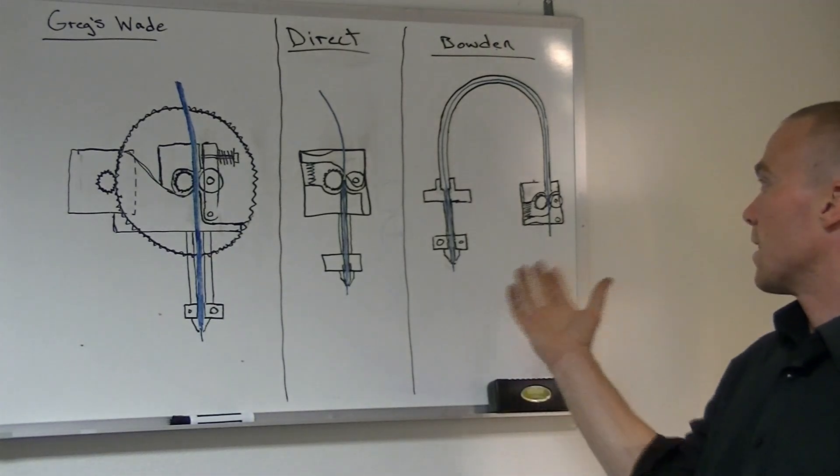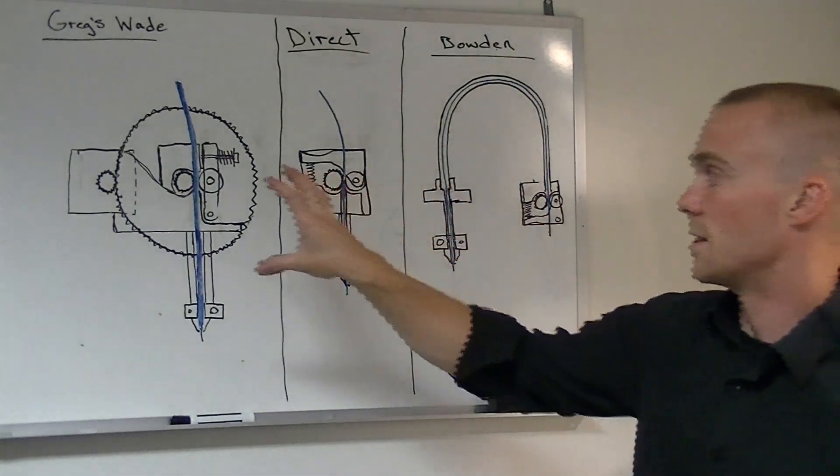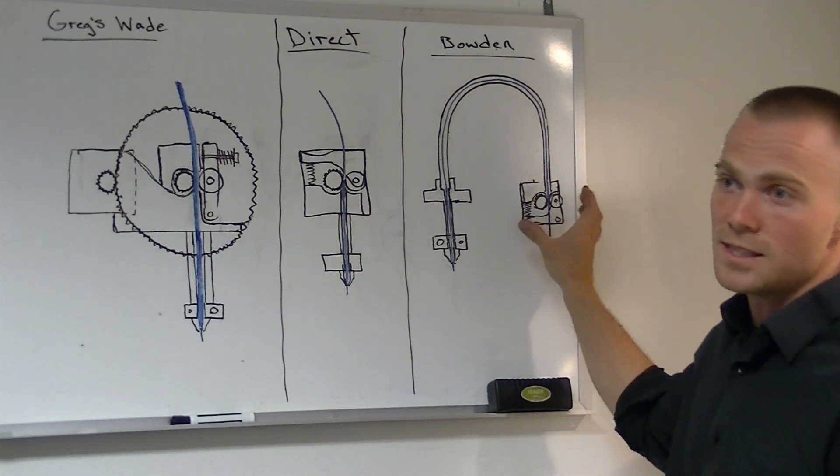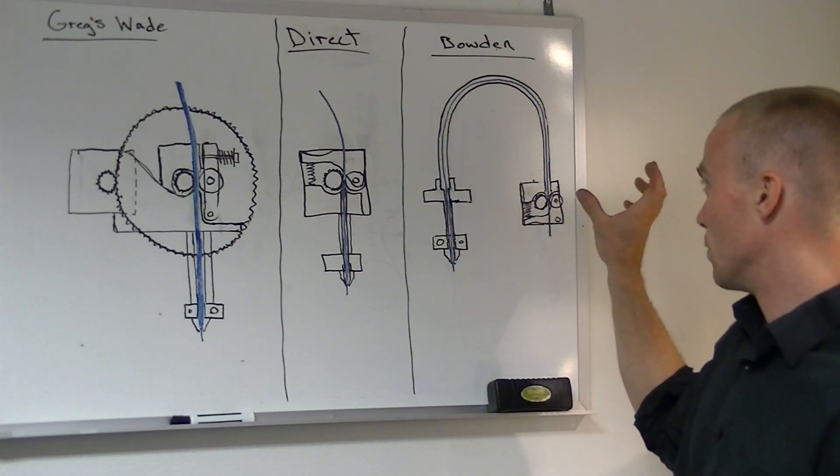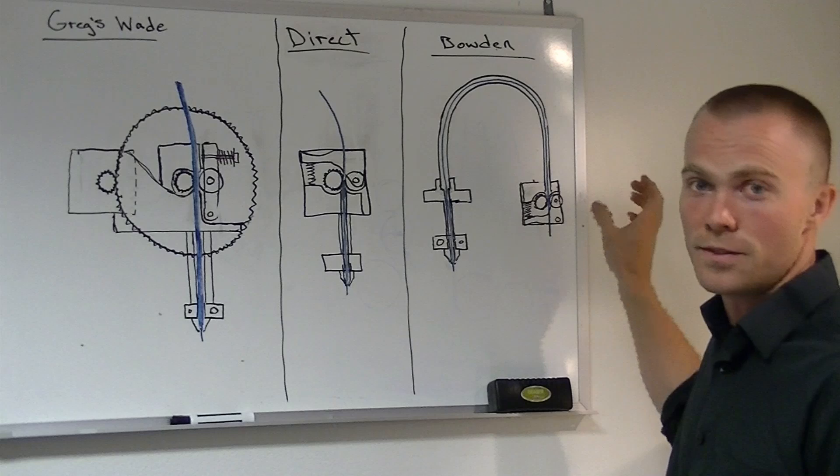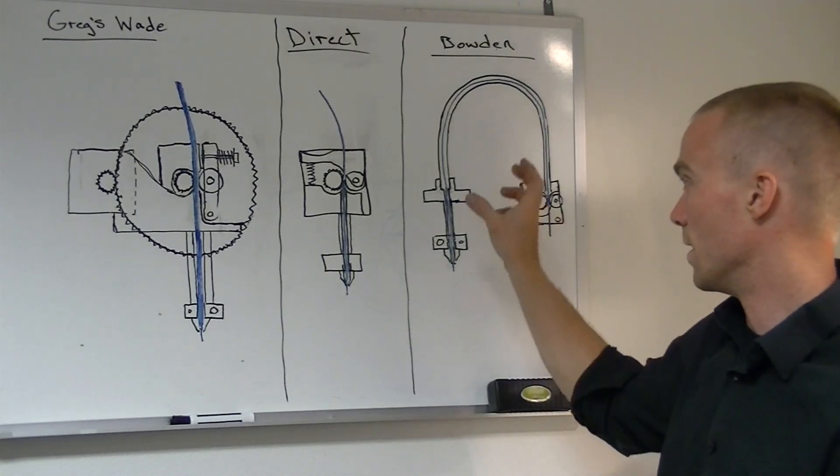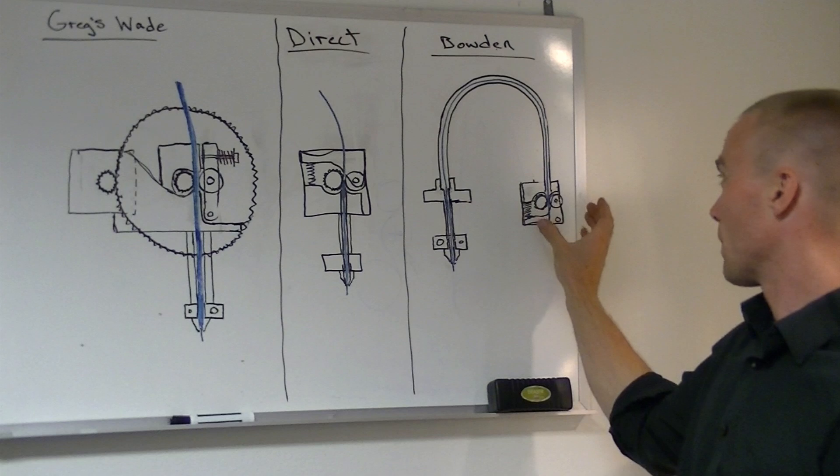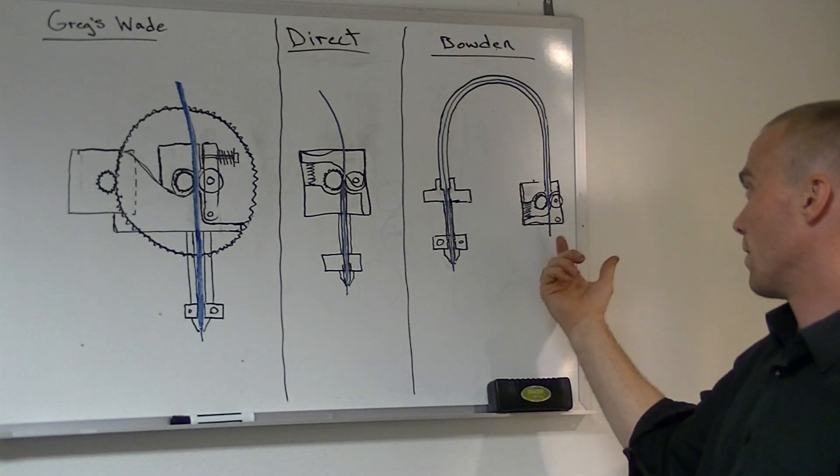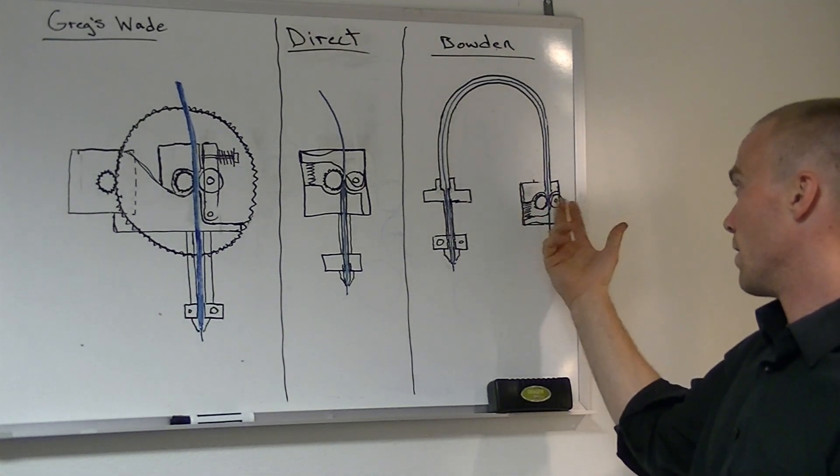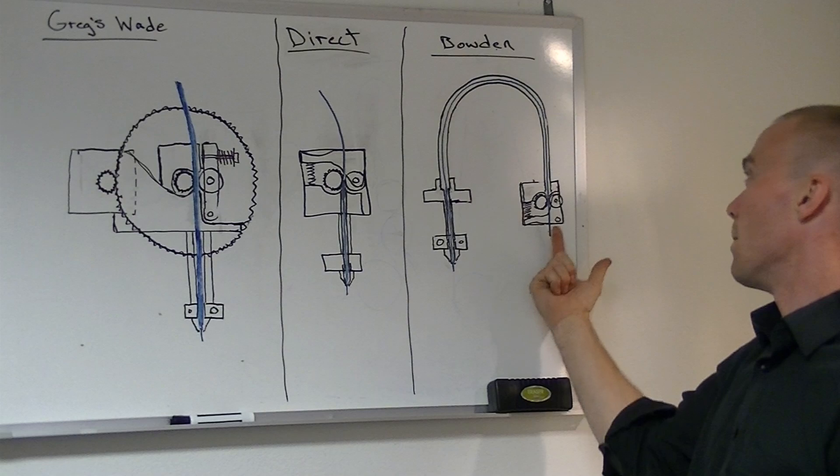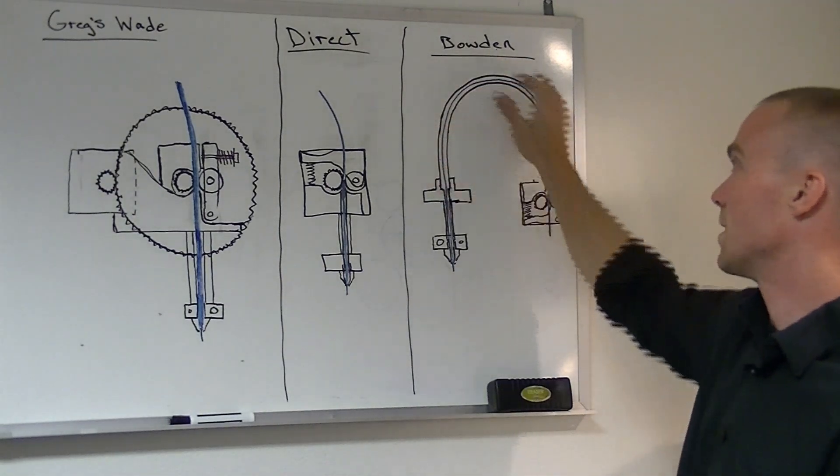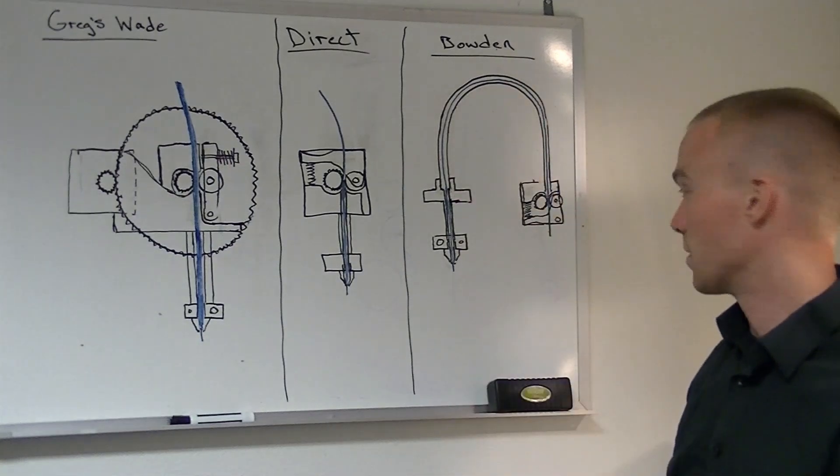The Bowden style extruder, it could be a similar drive setup to either of these, but the main difference is that the drive portion is mounted on a fixed point on the printer and the hot end is all that moves. So in this case I'm showing a direct drive setup where your drive gear and your nip force is here and you're pushing this filament all the way through the guide tube to the hot end. That's what defines a Bowden extruder.